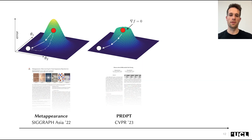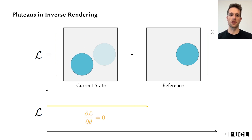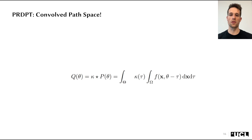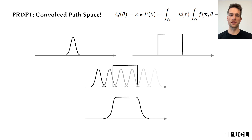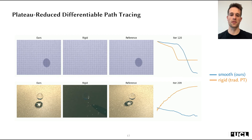In my second project, PRDPT, we look at a different reason that hinders convergence of inverse rendering: plateaus in the cost landscape. These originate from the fact that inverse rendering works by computing per-pixel differences in image space. Several parameter combinations can lead to the same loss valley, effectively creating plateaus where the gradient is zero and optimization gets stuck. We propose to alleviate this by convolving the rendering equation with a Gaussian smoothing kernel, which smooths out these plateaus and leads to smoother cost landscapes. We derive an efficient Monte Carlo estimator and importance sampler for this new path space, improving convergence and robustness for many inverse rendering scenarios.